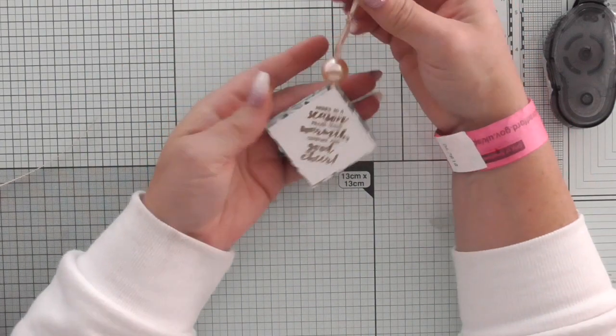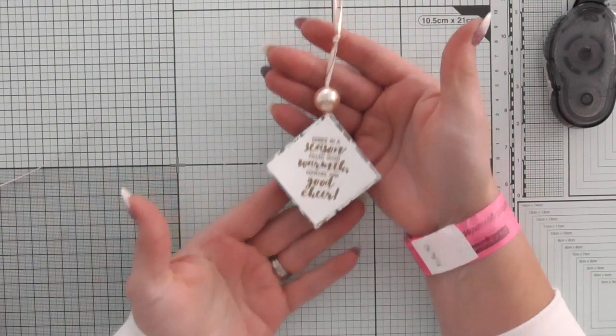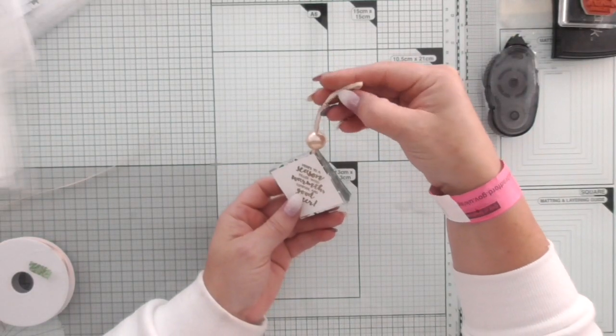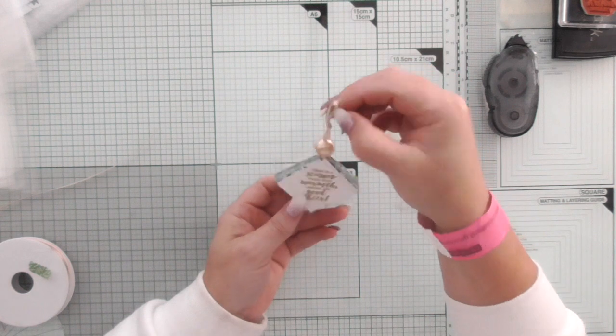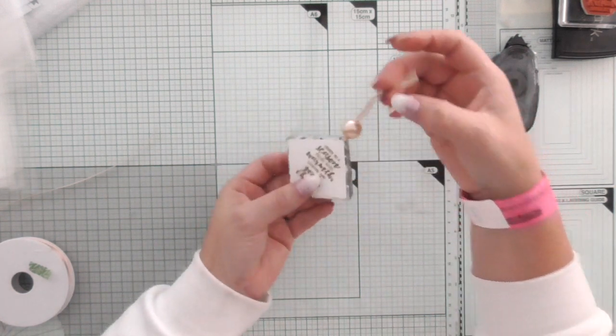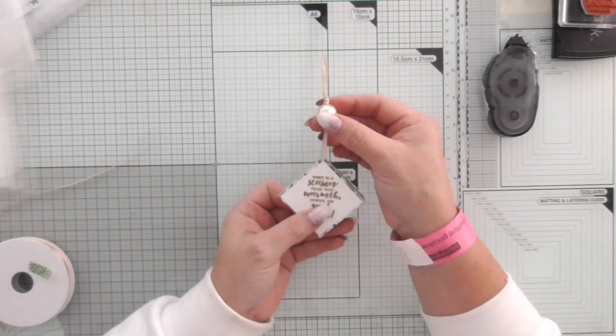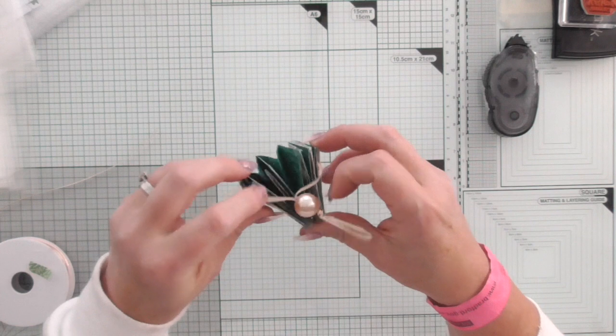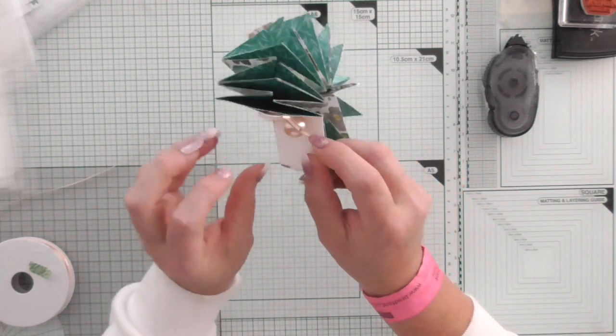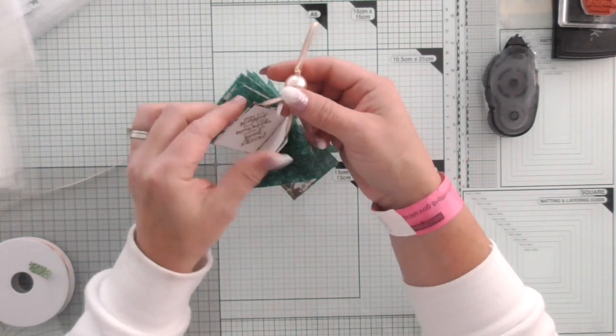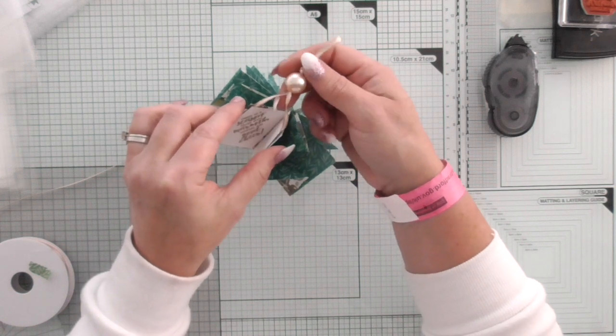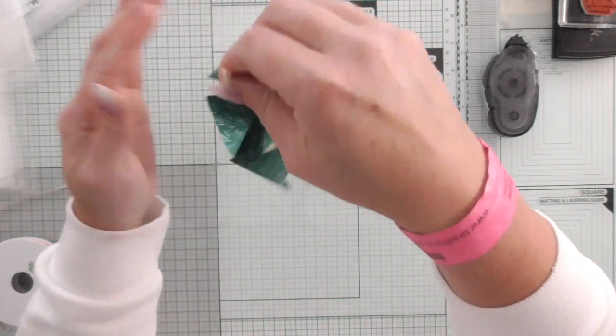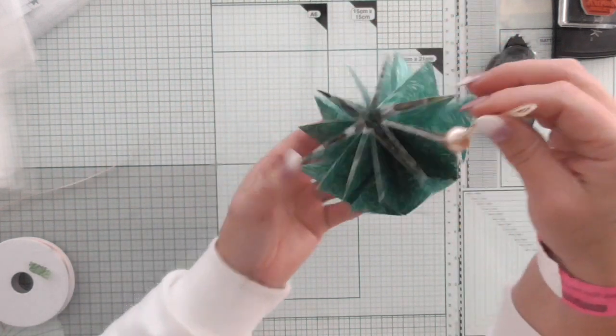So then when it's not in use you pull the bead down and it keeps it closed. Let me zoom out. So that will keep it closed and you can hang it on the loop like so. And then when you want to use it you lift the bead up and it should open. Yes.